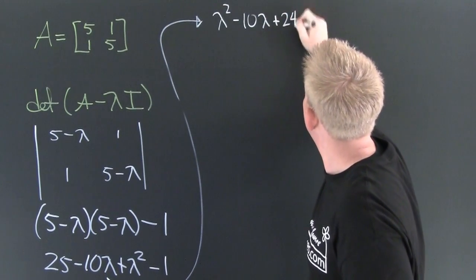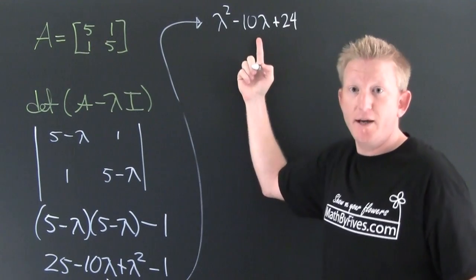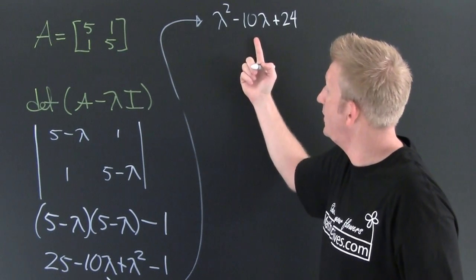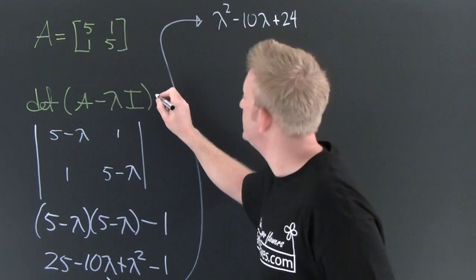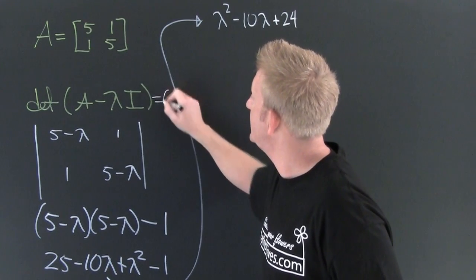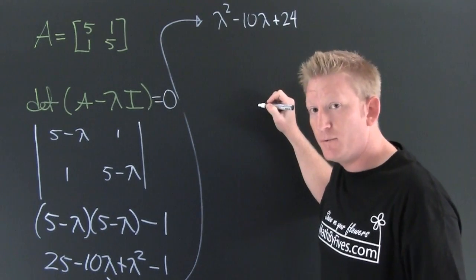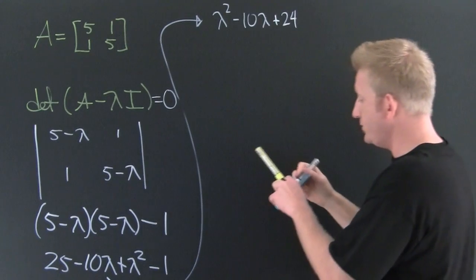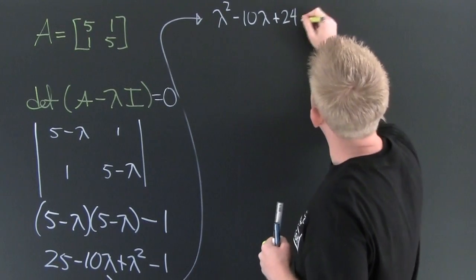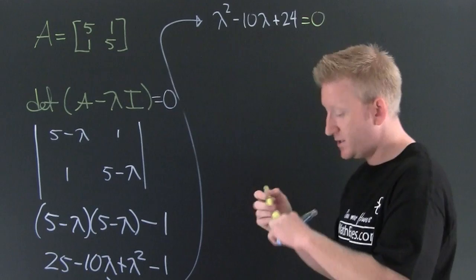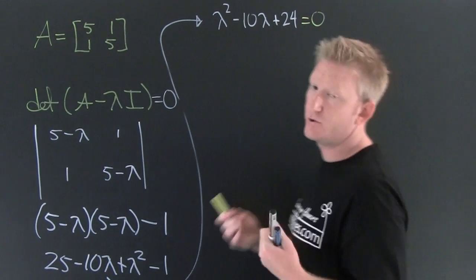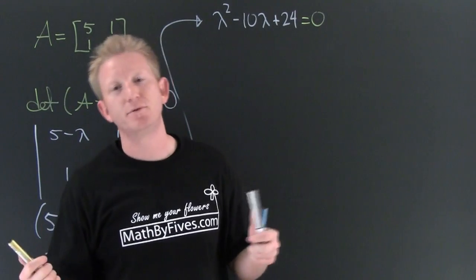I'm looking for lambda squared minus 10 lambda plus 24. This is my characteristic polynomial. Back here what I wanted to do is I wanted to see where this determinant was zero, and those would give me my eigenvalues. When I do that, this is called my characteristic equation. I need to solve this.